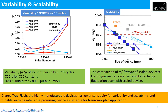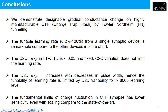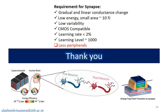Flash memory is a highly manufactured device with lower sensitivity for variability and scalability, and tunable learning rate, making it a promising synaptic device for neuromorphic applications. We have demonstrated FN tunnel-based charge-trap flash memory as a synapse. Tunable learning rate through this synapse is achieved. Cycle-to-cycle variability does not affect the learning rate, while device-to-device variability affects the learning rate only after 8000 levels of learning. Fundamental limits of charge fluctuation in charge-trap flash show lower sensitivity even with a scaled device. Charge-trap flash meets all the requirements mentioned in the literature except for peripheral circuits.